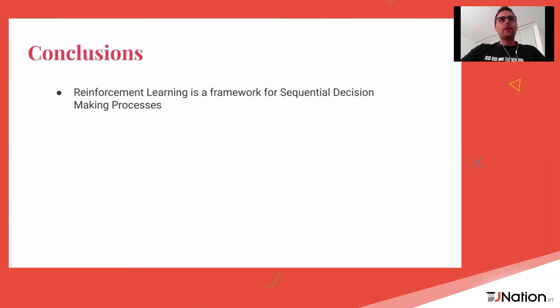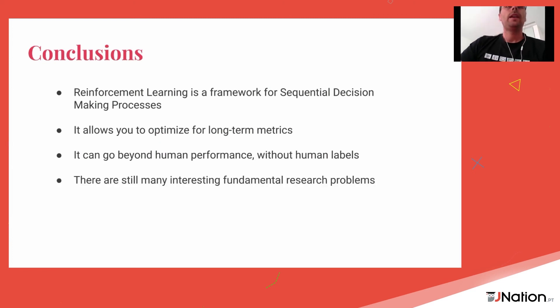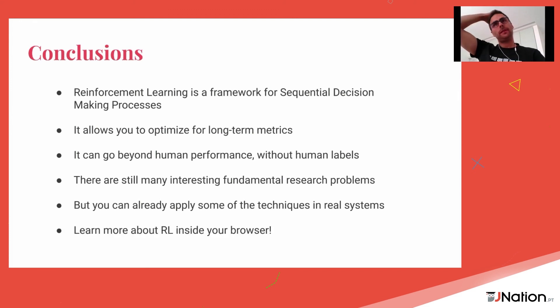To conclude: reinforcement learning is a framework for sequential decision-making. It allows you to optimize for long-term metrics. It can even go beyond human performance without human labels. There are still many interesting fundamental research problems, but you can already apply some of those techniques in real systems. Go ahead and learn more about it, even inside your browser. Thank you.